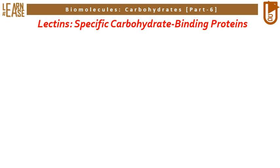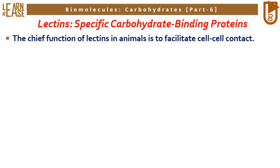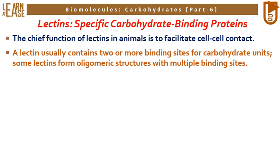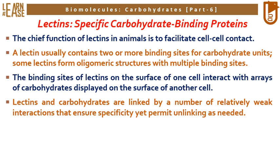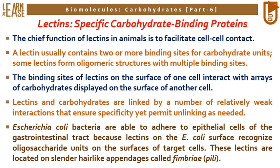A special family of carbohydrate-binding proteins known as lectins will now be briefly introduced. The chief function of lectins in animals is to facilitate cell-cell contact. A lectin usually contains two or more binding sites for carbohydrate units; some lectins form oligomeric structures with multiple binding sites. The binding sites on the surface of one cell interact with arrays of carbohydrates on another cell. Lectins and carbohydrates are linked by relatively weak interactions ensuring specificity yet permitting unlinking as needed. For example, Escherichia coli bacteria adhere to epithelial cells of the gastrointestinal tract because lectins on the E. coli surface recognize oligosaccharide units on target cells; these lectins are located on slender hair-like appendages called fimbriae (pili).